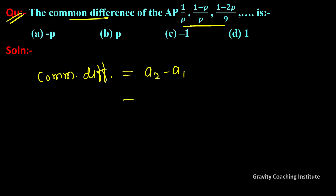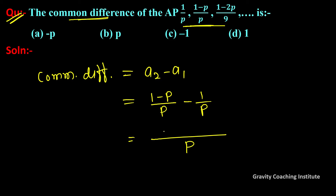So a2 minus a1 equals the second term (1-p)/p minus the first term 1/p. Taking the LCM as p, we get (1-p-1)/p, and the 1s cancel, leaving minus p upon p.